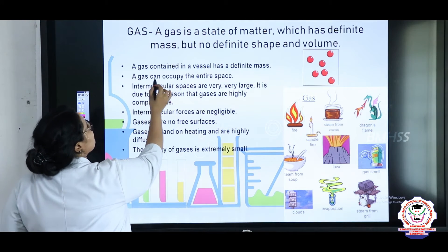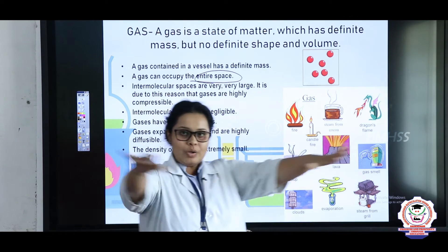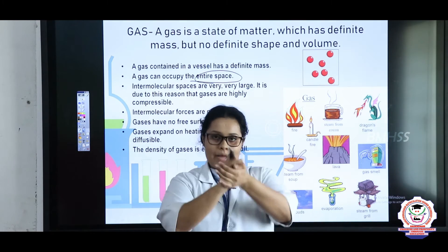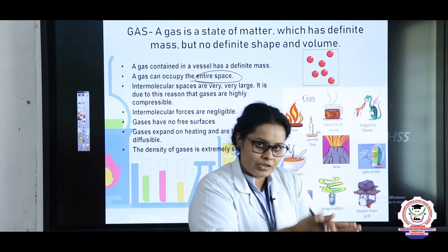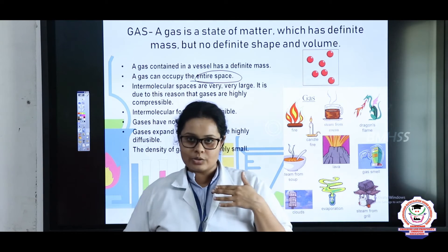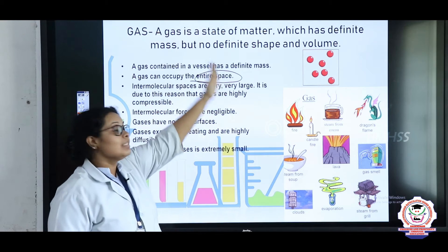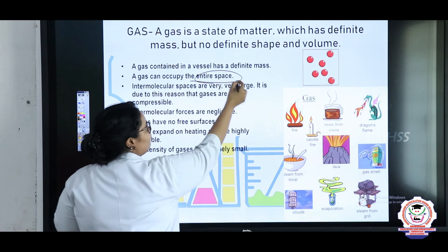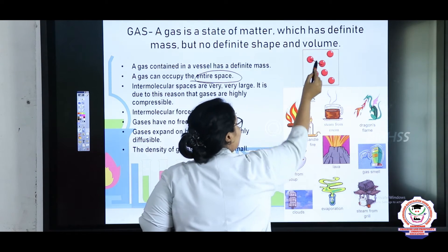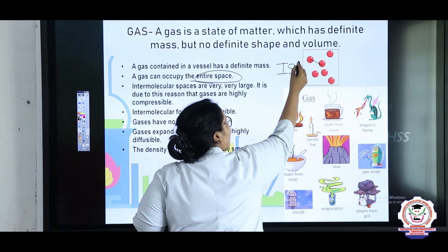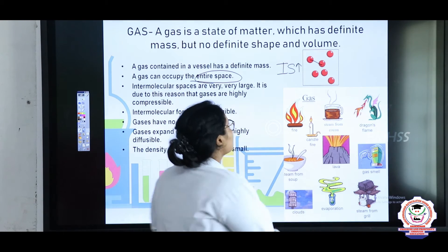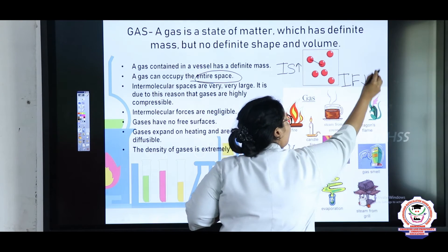A gas can occupy entire space — all over the place there is only gas. The gas can occupy the entire space wherever it is let free. If you capture the air, then you will have a definite shape and definite volume, but when you leave the air, it will occupy everywhere. The third point: intermolecular spaces are very, very large. The distance between two molecules is very huge, so the intermolecular force will be very less — it will be easy to break the bond. Intermolecular space and force are inversely proportional.